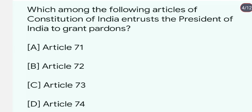Which among the following articles of the Constitution of India empowers the President of India to grant pardon? This is talking about Article 72. Article 72 of the Indian Constitution empowers the President of India to grant pardon, reprieves, respites, and remission.